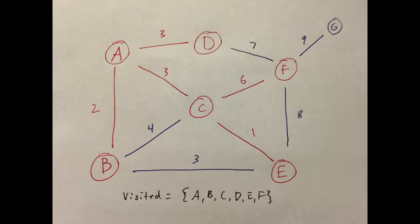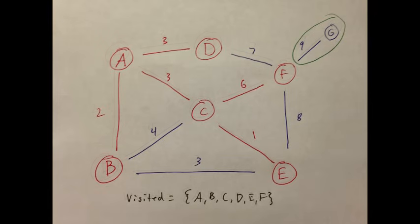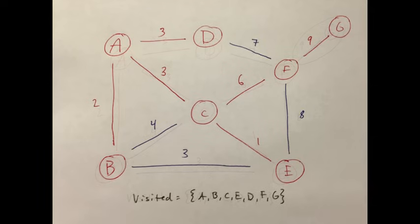The only unvisited node remaining is G, so we add this to the minimum spanning tree. All the nodes are now connected in a tree.